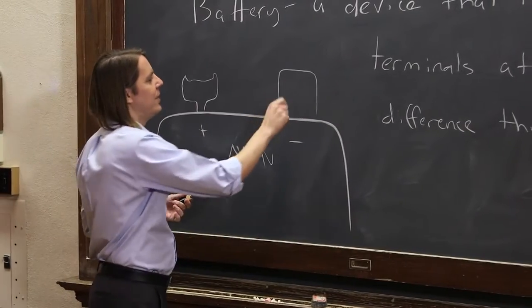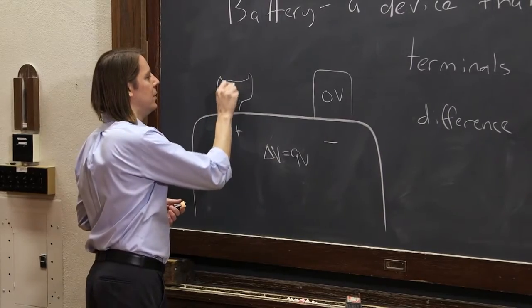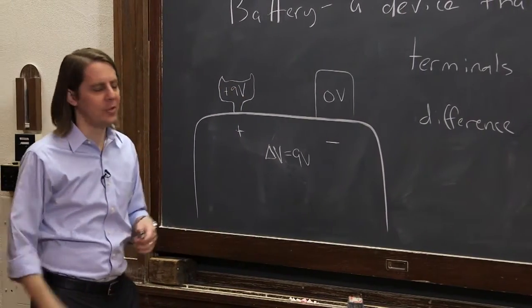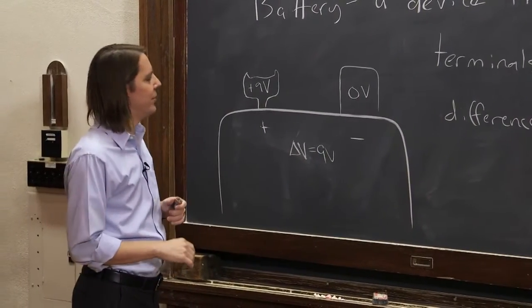So in this case, we're going to say the negative side will be just called zero volts. And if that's zero volts, then this is at plus 9 volts. So potential is always a difference, but if you define as zero, then you can start defining absolute potentials relative to that zero.